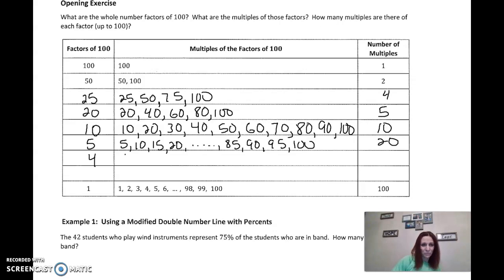Okay, same thing on the next one, a 4. 4, 8, 12, 16, 20, a whole bunch in between, 88, 92, 96, 100. And again, 4 times what number equals 100? There's 25 of those numbers. If I wrote them all out and counted them.